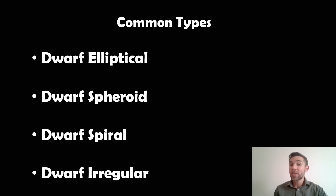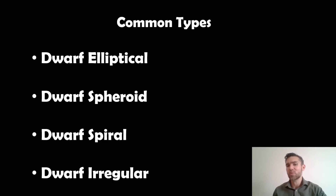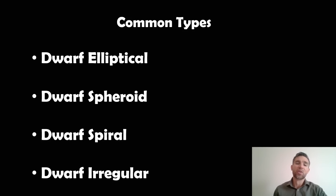The common types of dwarf galaxy are elliptical, spheroid, spiral, and irregular. Most of those sound exactly like normal larger galaxies — elliptical, spiral, and irregular. The spheroidal ones are probably just a variant of the elliptical, being more spherical as opposed to more elliptical. So these are sounding quite similar to the larger galaxy types, at least initially.